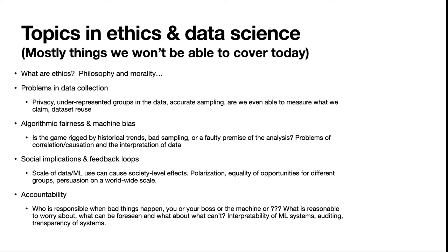There are a lot of social implications when we operate at large scales. The things that a Facebook or a YouTube can do can affect society at a global level — that's just a function of their incredible reach. And finally, we have issues of accountability: when these things go wrong, is it you the data scientist, your boss, or the machine that's at fault? We have to understand who is supposed to be taking responsibility. There are also issues where ML systems make a decision and nobody knows how — the interpretability of systems can be a problem, as well as the transparency of how systems were built.